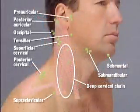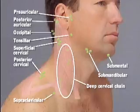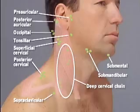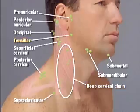The lymph nodes of the head and neck are identified here using one of several classifications. The overlying sternomastoid muscle largely obscures the deep cervical chain, but at the extremes of the chain, the tonsillar node and the supraclavicular nodes may be palpable.